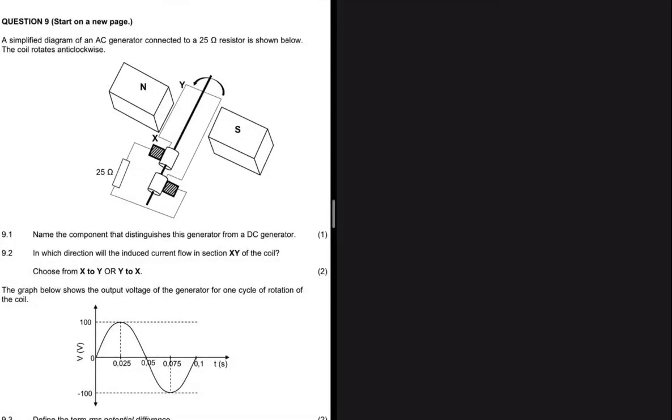A simplified diagram of an AC generator connected to a 25 ohm resistor is shown below. The coil rotates anticlockwise. Question 9.1 says name the component that distinguishes this generator from a DC generator. This is clearly an AC generator and we are even told so, so why are we saying that is a DC generator?